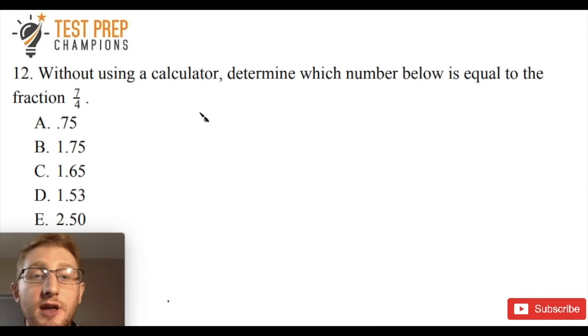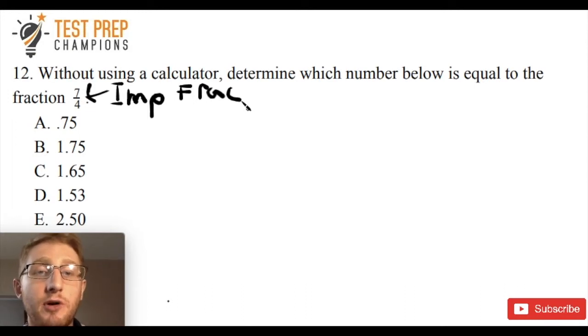Okay, so the first thing we have to understand is that we are working with an improper fraction. 7 fourths is an example of an improper fraction. I'm not going to write that whole thing out, I'm just going to put imp frac. And whenever you see that the number on top is bigger than the number on the bottom of the fraction, it's an improper fraction.